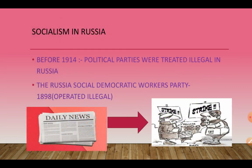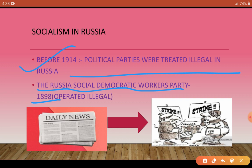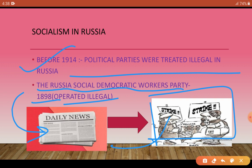Now let's come to the socialism topic. Until 1914 in Russia, forming political parties was illegal — no one could form any political party in any way. Despite this, in 1898 the Russian Social Democratic Workers' Party was formed, operating illegally. It was allowed at the national level but operated secretly. All the workers' strikes were operated by this political party through newspapers, so that workers understood and went on strike — quite a wonderful strategy.